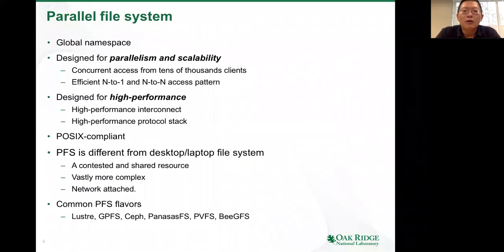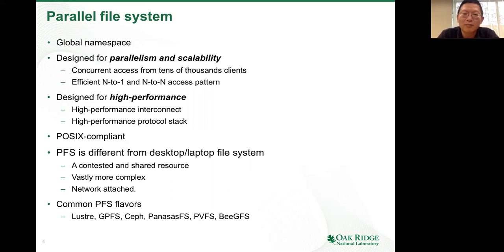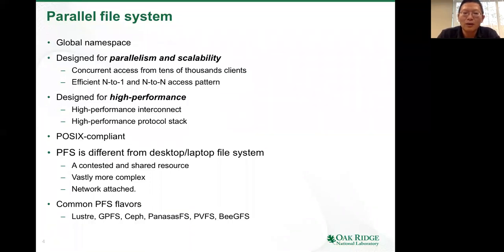PFS systems share a common set of characteristics. First, they usually support a so-called global namespace. What that means is it doesn't matter which compute nodes are allocated in your job—when your application starts, it can see a consolidated and consistent view of the files and directories. The PFS is also designed with parallelism and scalability in mind, supporting concurrent access from tens of thousands of clients, and also supporting N-to-1 and N-to-N access patterns.